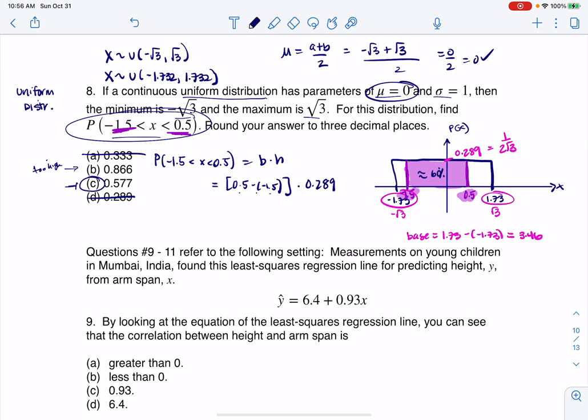All right, so 0.5 minus negative 1.5 is actually 2, because this is 0.5 plus 1.5, all right, times 0.289. And if you're wondering about that, if you think about your half a unit up the X-axis to negative 1.5 units below that, or to the left of that X-axis, this is 2 units. All right, if you want to go from negative 1.5 to positive 1.5, that's 2 units. So this is 2 times 0.289. And when I crunch that number on my calculator, I do get 0.577, which is what, just graphing that problem, I got to that anyways.